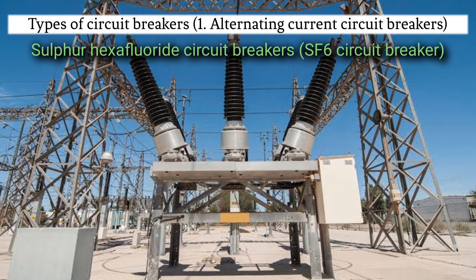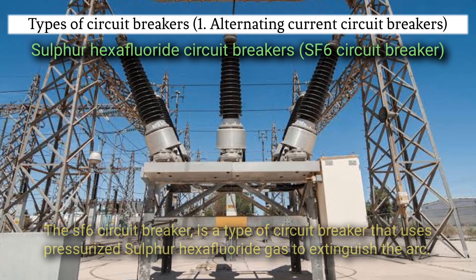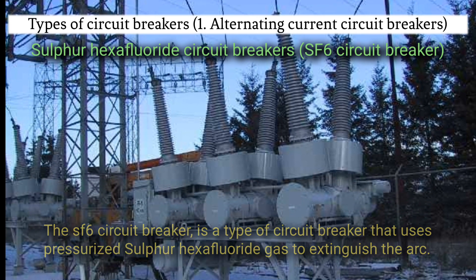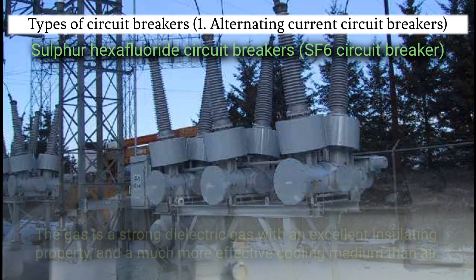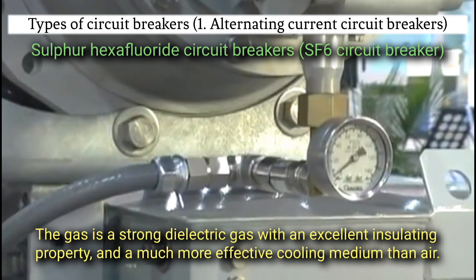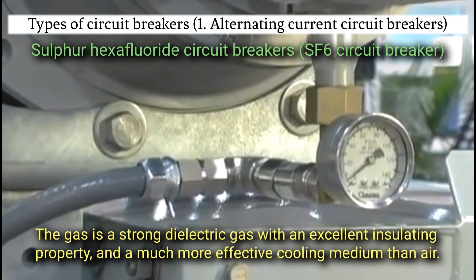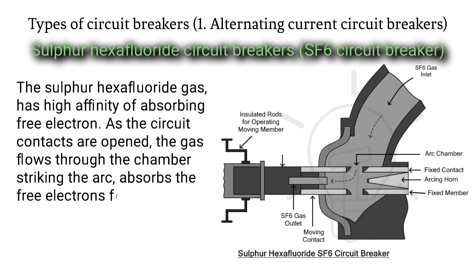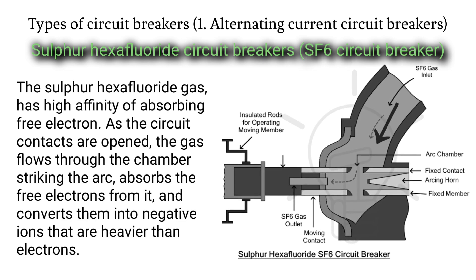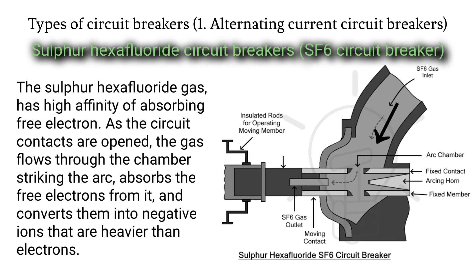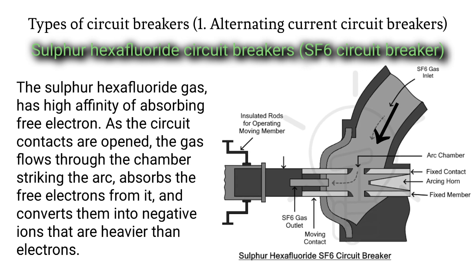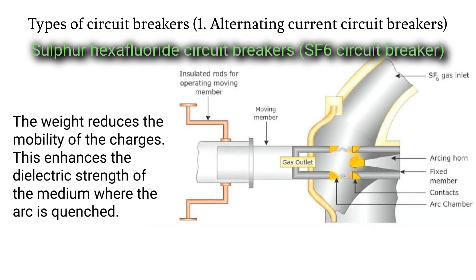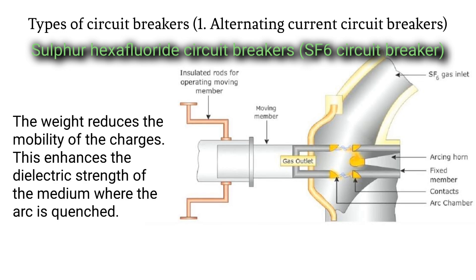Sulphur hexafluoride circuit breakers, SF6 circuit breaker. The SF6 circuit breaker is a type of circuit breaker that uses pressurized sulfur hexafluoride gas to extinguish the arc. The gas is a strong dielectric gas with excellent insulating property and a much more effective cooling medium than air. The sulfur hexafluoride gas has high affinity for absorbing free electrons. As the circuit contacts are opened, the gas flows through the chamber striking the arc, absorbs the free electrons from it, and converts them into negative ions that are heavier than electrons. The weight reduces the mobility of the charges, enhancing the dielectric strength of the medium where the arc is quenched.